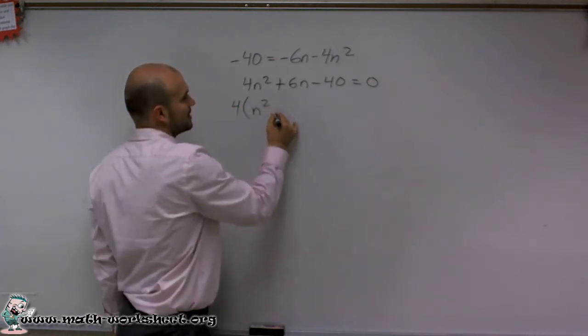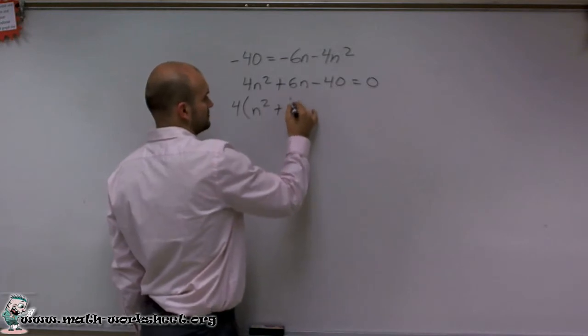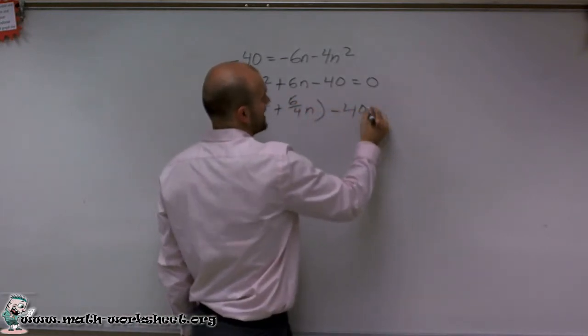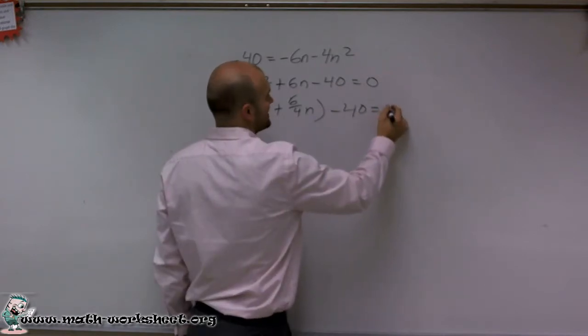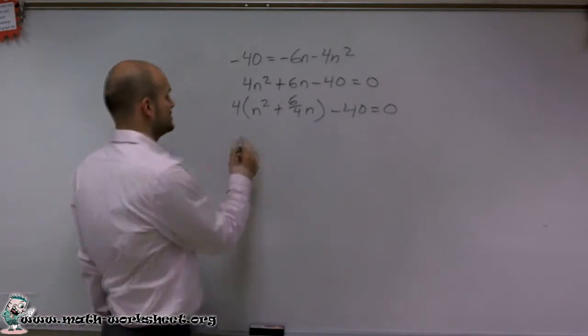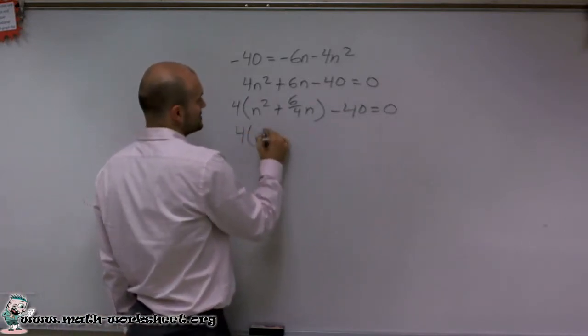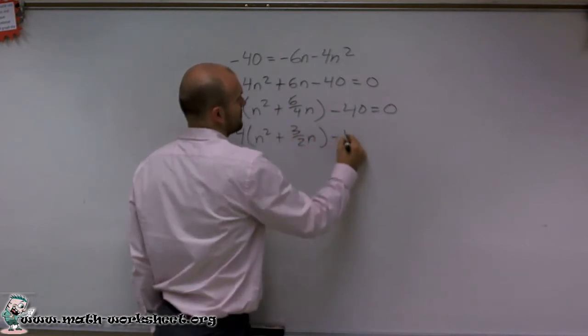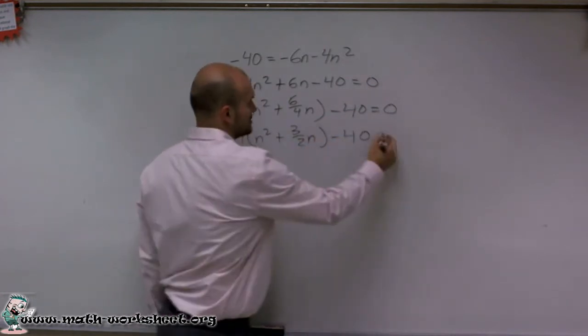When I factor out a 4 out of my first two terms, I'm going to be left with n squared plus 6 fourths n minus 40 equals 0. Now, I can also reduce that. Whenever we have an opportunity to reduce, you always want to make sure you can take a look at it.